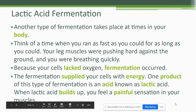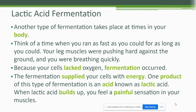The second type of fermentation you have probably experienced yourself — it takes place in your body. Think of a time when you ran as fast as you could for as long as you could, and your leg muscles started cramping up or getting tight while you were breathing really fast. Because your cells started to lack oxygen and your body couldn't produce the oxygen you needed, you started breathing quickly and fermentation occurred. Fermentation supplied your cells with energy, but a product of this type of fermentation is an acid known as lactic acid. As that acid builds up, giving you energy to continue running, you feel that painful sensation or cramp in your muscles. You need to rest so that acid can reduce and your body can get the oxygen it needs to return to stable homeostasis.